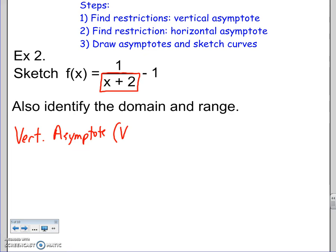Alright, so that's going to be our VA. Alright, well, x plus 2 cannot be zero. So if I subtract 2, subtract 2, x cannot be negative 2. That means there's our asymptote at negative 2.